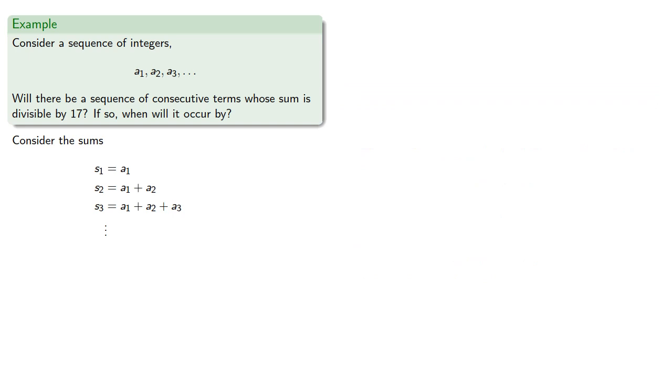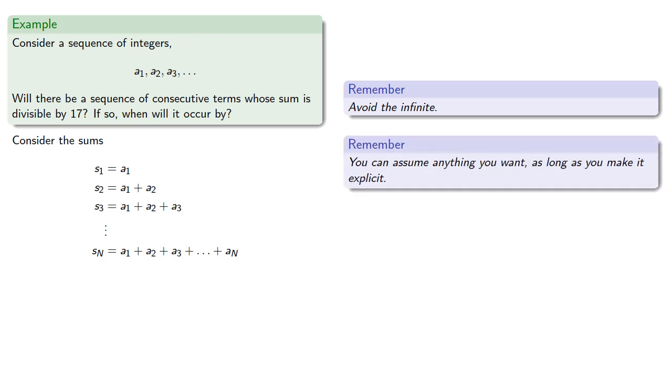But it's best to avoid the infinite, so let's cap the partial sums at some point. And remember, you can assume anything you want, as long as you make it explicit.